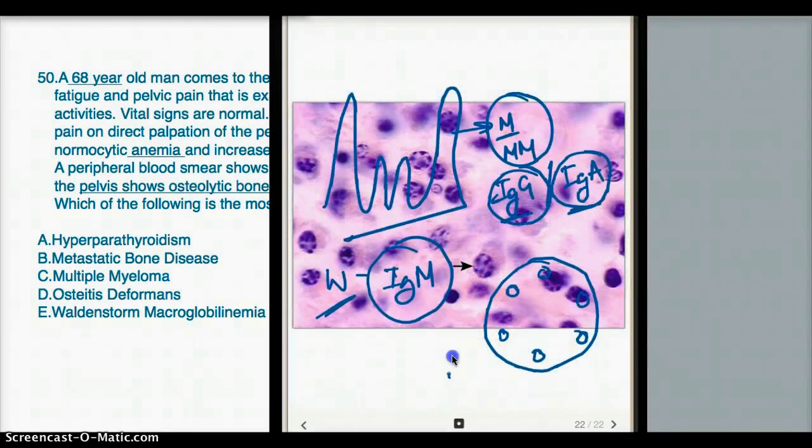this is a clock face chromatin, right that one. And you can see that you can kind of see a little bit of clock formation here. So these are clock face chromatin that we see in multiple myeloma.